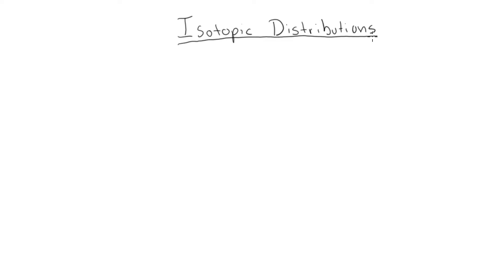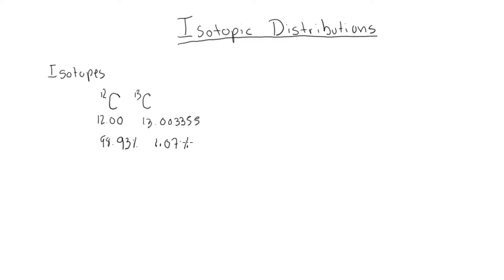The first important topic in isotopic distributions is what isotopes are. For today's work, we're going to focus primarily on carbon. Carbon has two major isotopes: carbon-12 and carbon-13. Carbon-12 has a mass of 12.00 and an abundance of 98.93%, and carbon-13 has a mass of 13.003355 and has an abundance of 1.07%.